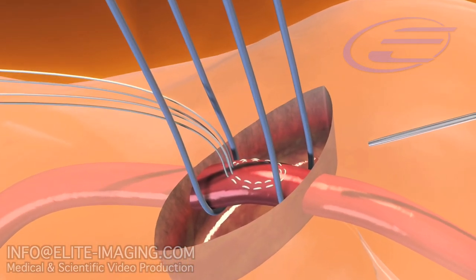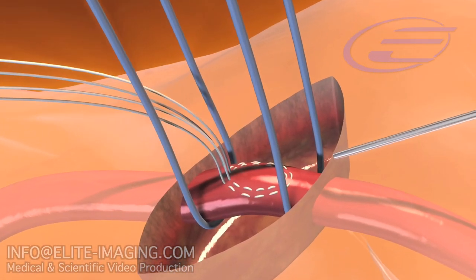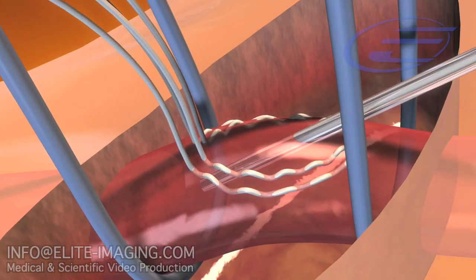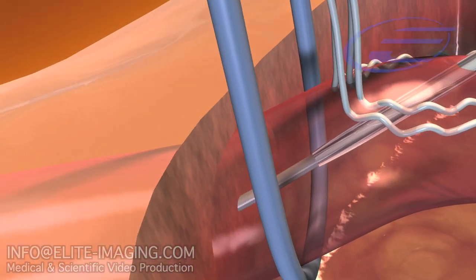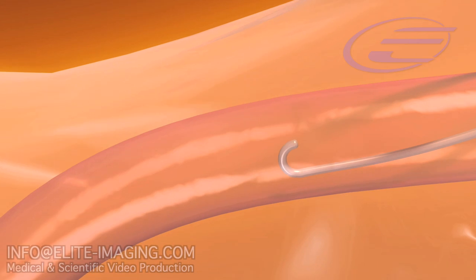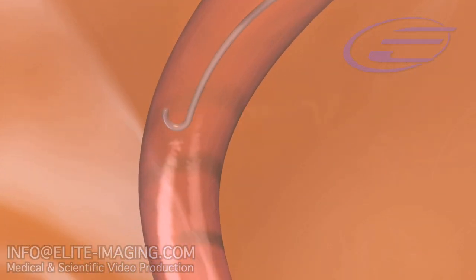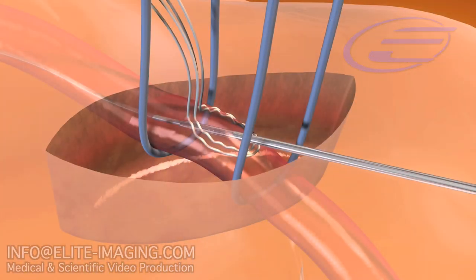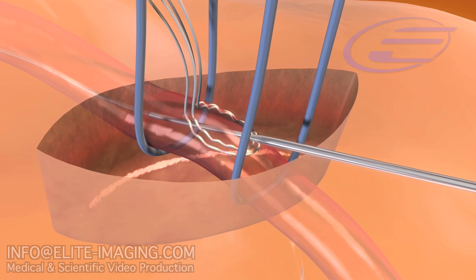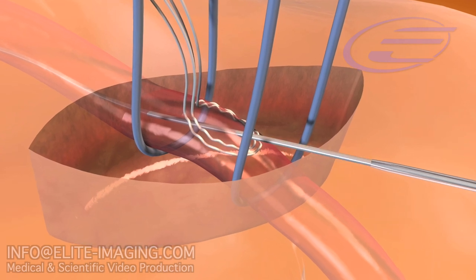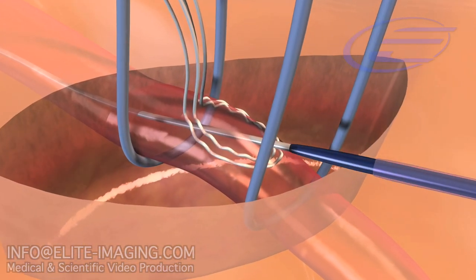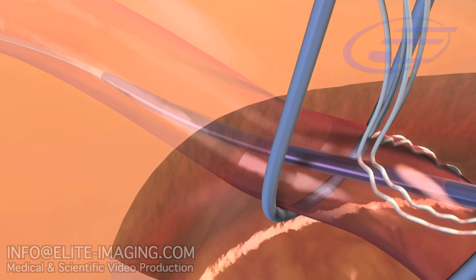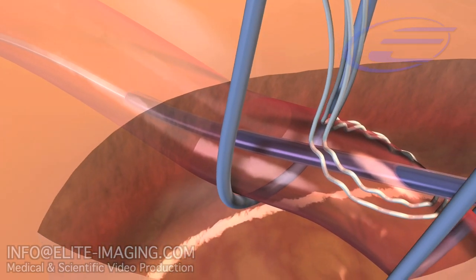Puncture the downstream side of the oval shaped arterial access site using an 18 gauge thin wall needle. Insert a standard 0.035 J-tip guide wire through the needle and advance into the subclavian artery. Exchange the needle for a 7 French introducer to further dilate the vessel, enlarging the arterial access site in the upstream direction if necessary.